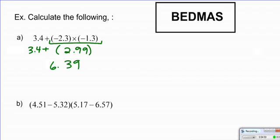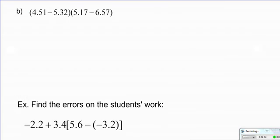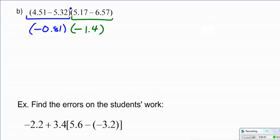When we look at the second example, we have two sets of brackets back to back, and each bracket has subtraction going on. And so I want you to keep in mind that when two things are touching without an operation in between, it actually means they're being multiplied. And so we have two brackets being multiplied with subtraction in between. We need to solve the brackets first. So 4.51 take away 5.32, I'm taking away more than I have, so I end up with negative 0.81. In the second bracket, we have 5.17 take away 6.57. Again, I take away more than I have, so I'm going to be left with a negative 1.4. Now we have two brackets being multiplied, two negative integers being multiplied. We're going to end up with a positive 1.134.